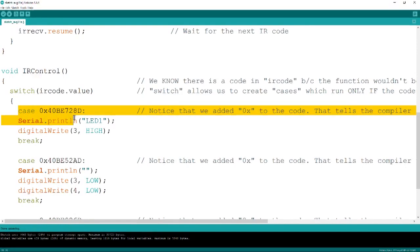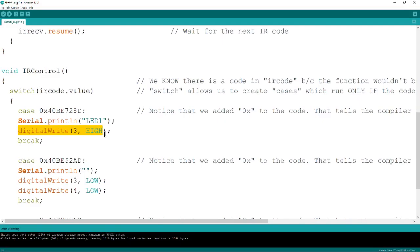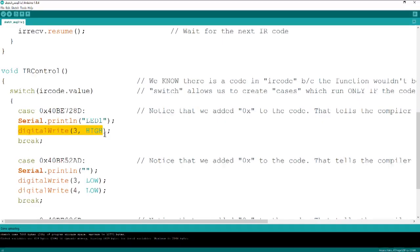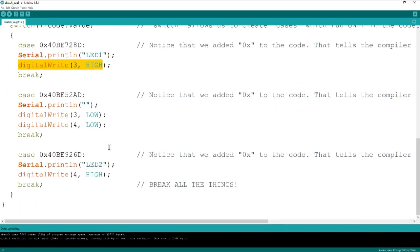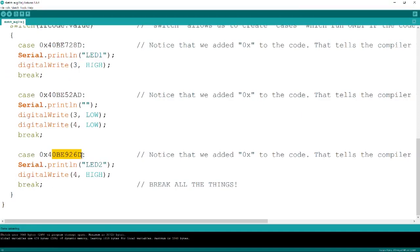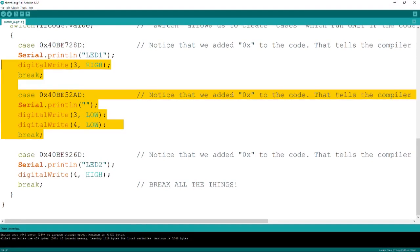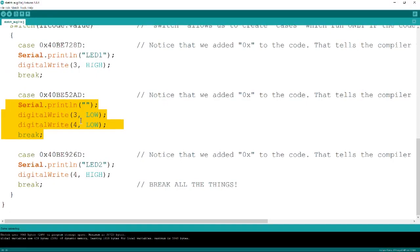This is the only part that's different about this function. Digital write, 3, high, which means if this is triggered, if this code is received, it will write high, which is on, to digital pin 3. Down here, it says if this case happens, so this is the right button, digital pin 4 goes high. The middle button, the OK button, if I push that, both digital pin 3 and digital pin 4 will go low. So this is what it means. If I hit the left button, it will turn on one LED. If I hit the right button, it will turn on the other LED. If I hit the OK button, it turns off all the LEDs.